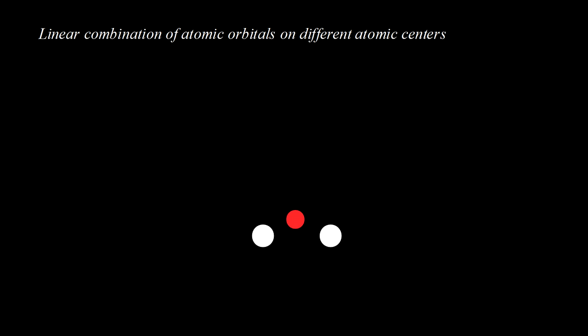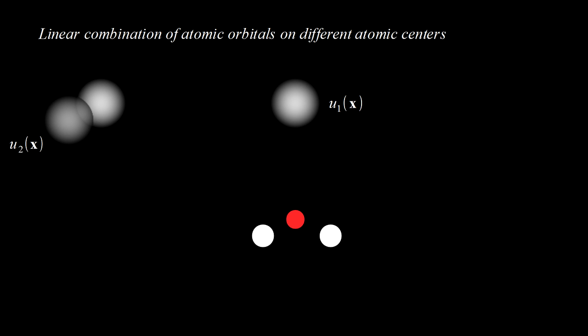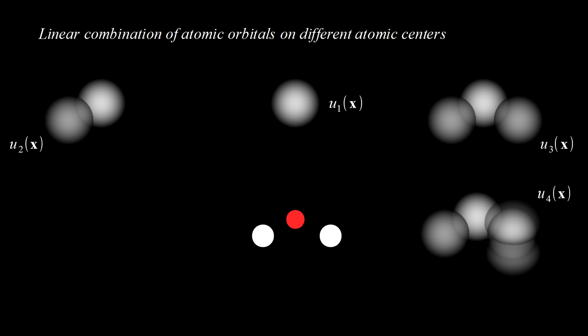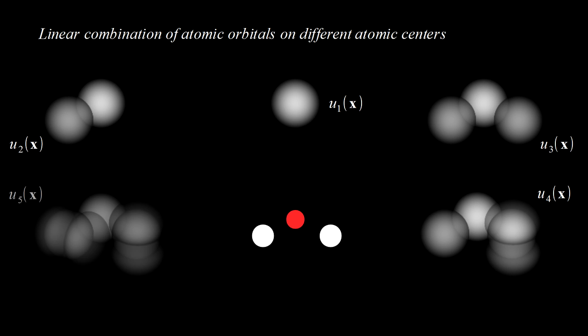Suppose we're solving for the orbitals of the water molecule. Basis function U1 might be an s orbital centered on the oxygen nucleus. Basis function U2 could be an s orbital centered on one of the hydrogen nuclei, and U3 the same but centered on the other hydrogen nucleus. We could have more basis functions representing p-type orbitals centered on the various nuclei and so on.